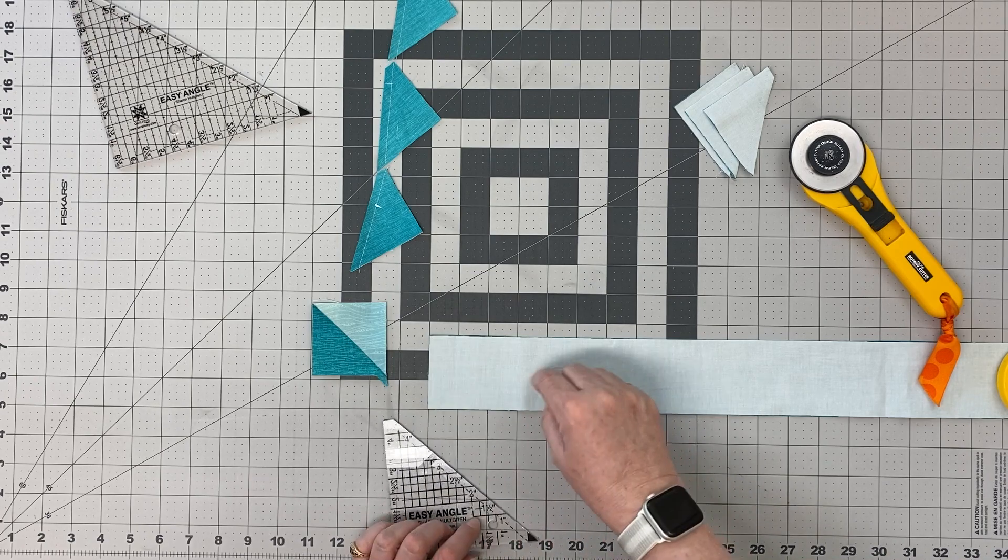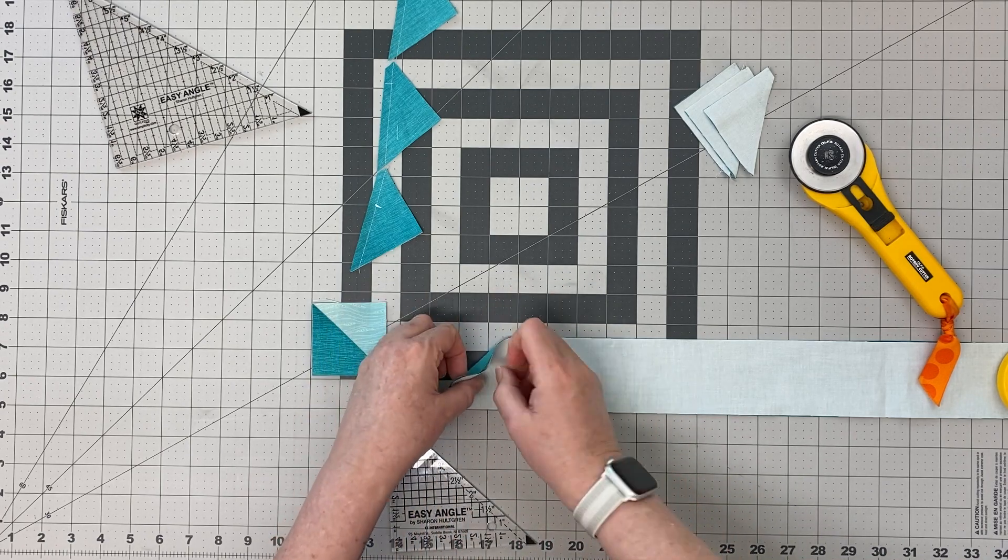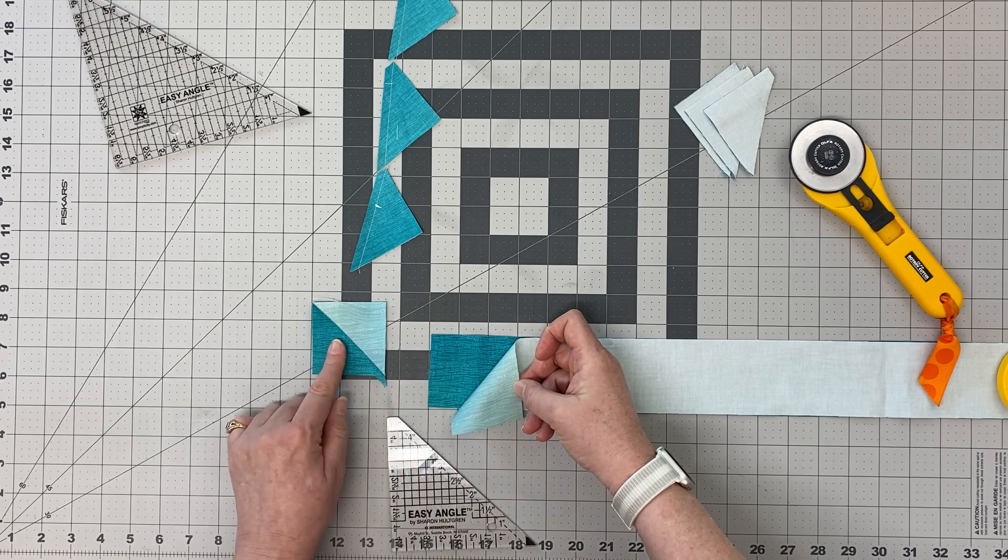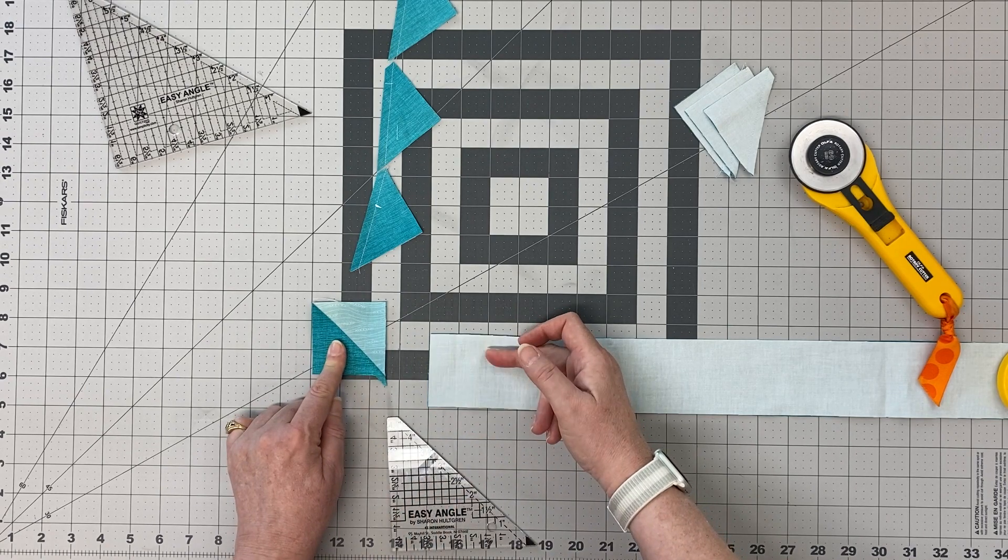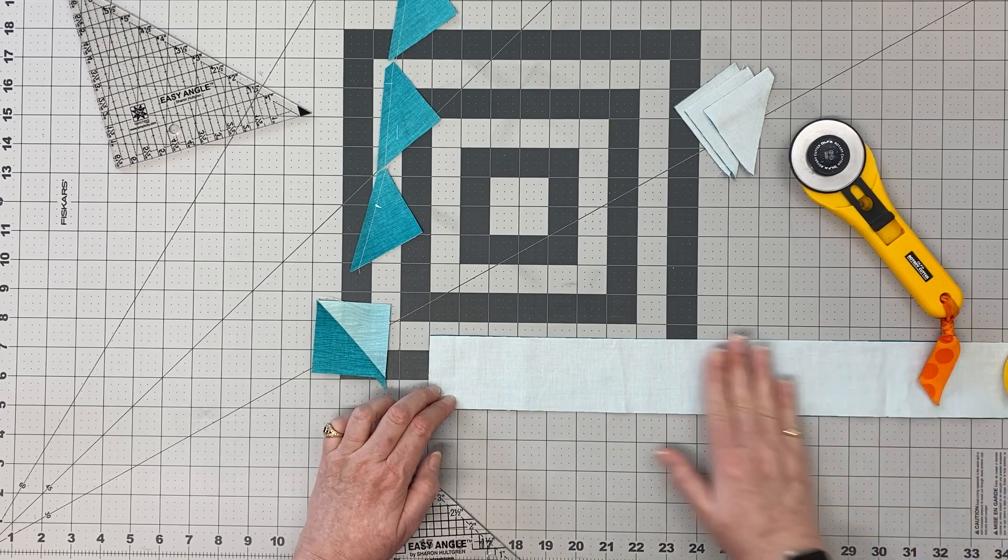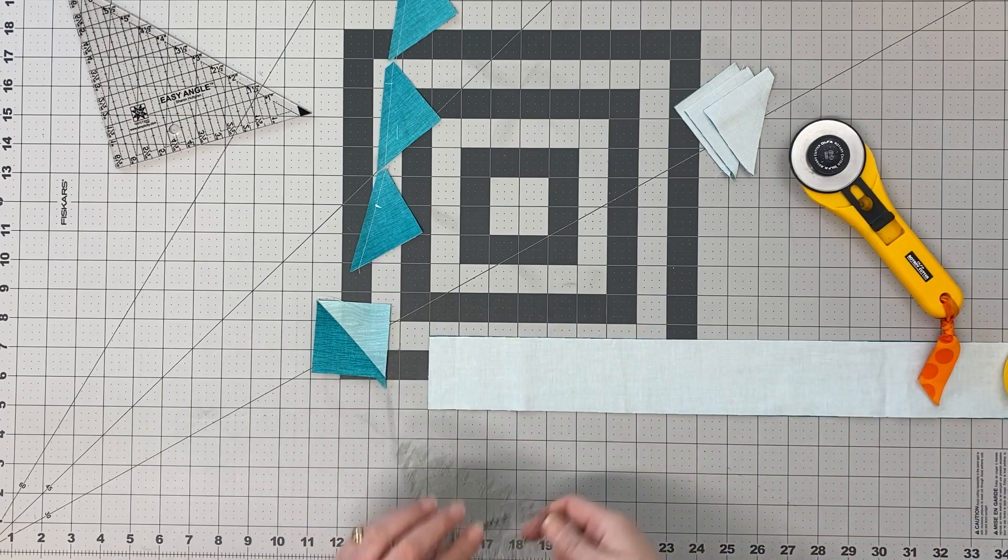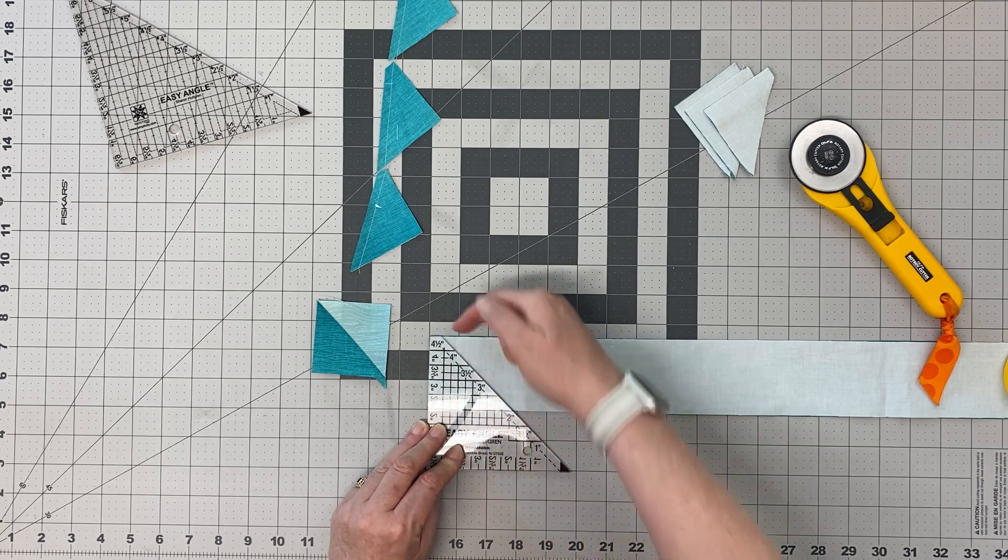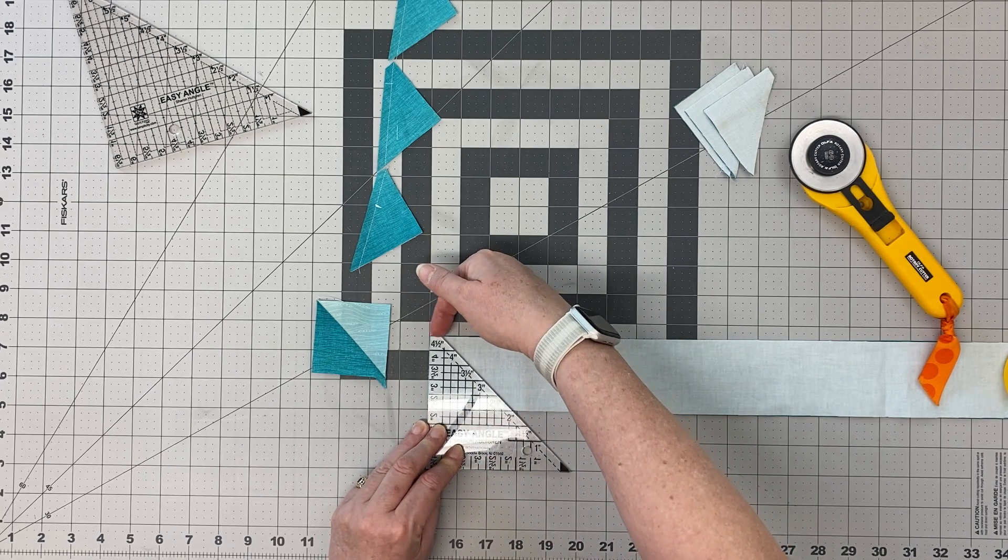first, put two strips together right sides together. This is how we want these to come out. Line them up against a line on your mat just to keep things straight, and then pop the ruler on top. Line up to a line here, make sure the stubby end is at the top of the fabric, hold down nice and tight, and cut. You get this. Now the other